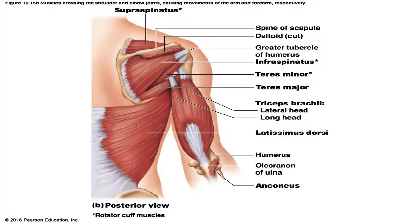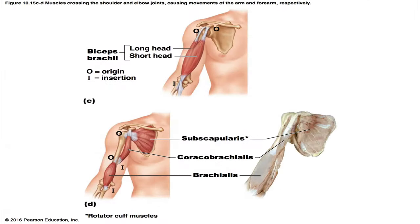The latissimus dorsi is a broad, flat, triangular muscle of the lower back around the lumbar region. It's covered by the trapezius superiorly and contributes to the posterior wall of the axilla. Its insertion is the intertubercular groove of the humerus. Its origins include the spinous processes of T7 down to L5, the iliac crest of the sacrum, the thoracolumbar fascia, the inferior angle of the scapula, and the lower 3 or 4 ribs. It is innervated by the thoracodorsal nerves — specifically cervical nerves 6, 7, and 8.